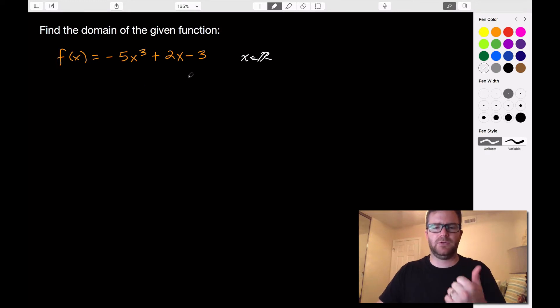So real numbers include integers. Integers have no problem being cubed, have no problem being multiplied by 2. They include rational numbers, fractions, you can cube fractions, you can raise fractions to any power. You can multiply fractions by whole numbers.